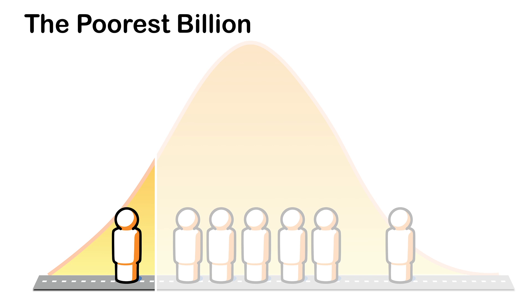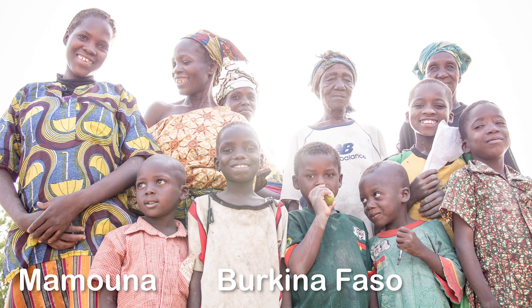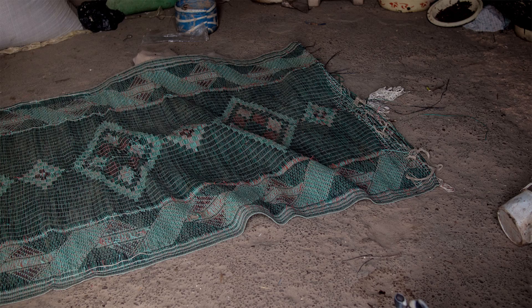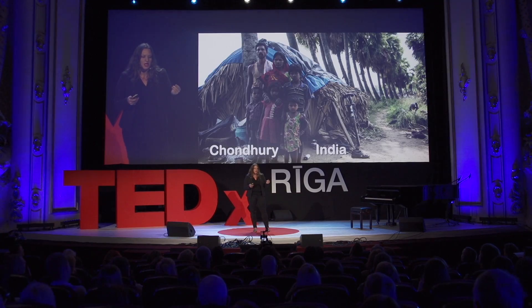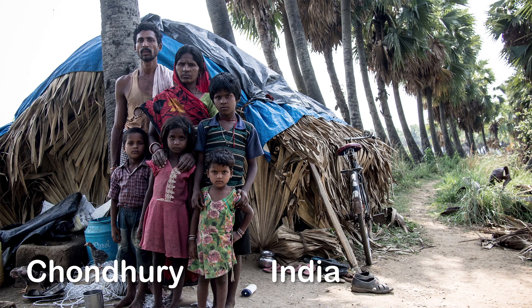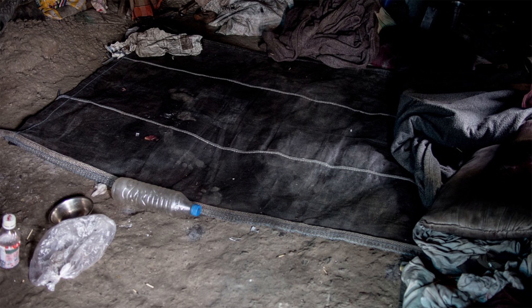If we go to the absolute poorest, the extremely poor, what would it look like there? Here we have the Mamuna family in Burkina Faso. They live in this house and they sleep on this bed. When we talk about extreme poverty, we very often think about Africa. But in fact, most people actually live in Asia. So going to Asia, meeting the Shonduri family in India, we go into their home and we see they also sleep on a mat on the floor in the same manner.